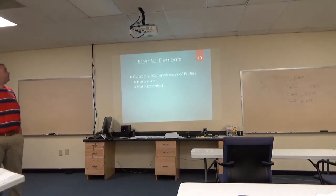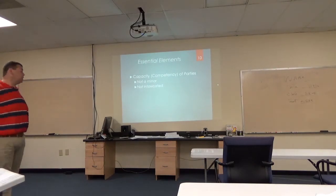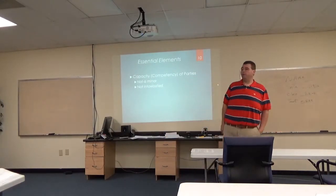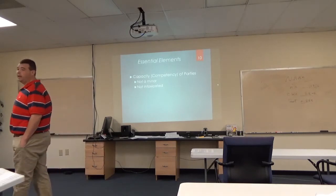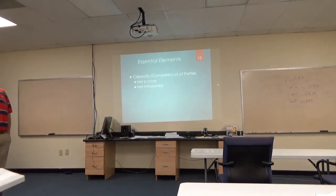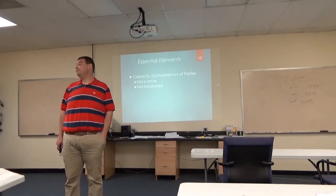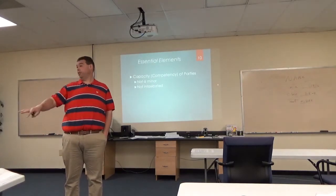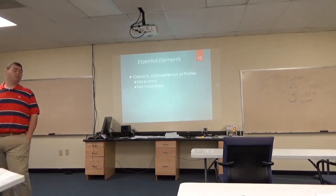Essential elements of a valid contract: first, we need legal capacity or competency of the parties. There are two main things to be concerned with — that they're not a minor, which in North Carolina is anyone under 18 (the minimum age for contract capacity in North Carolina), and that they are not intoxicated in any way. An intoxicated person does not have the legal capacity to enter into a contract.